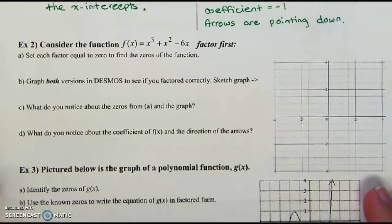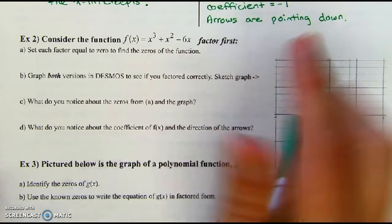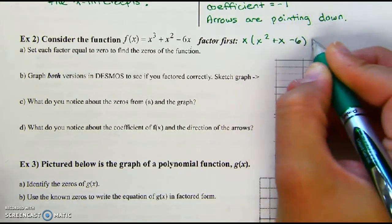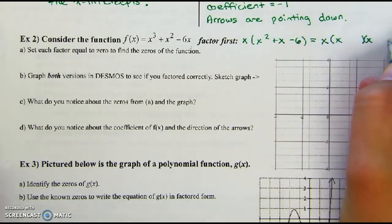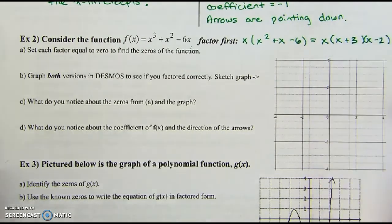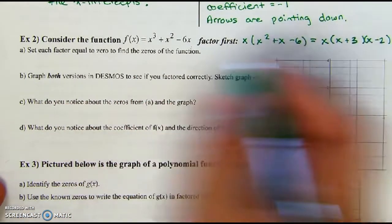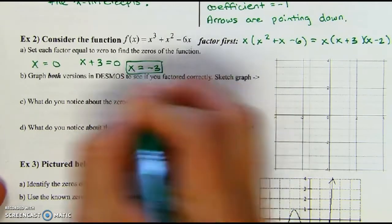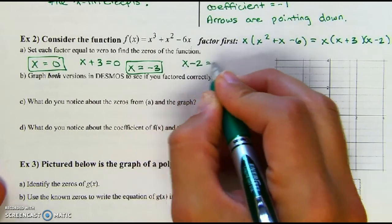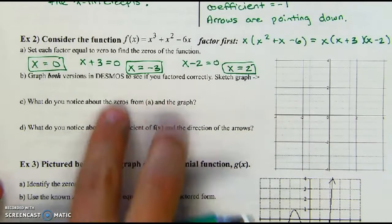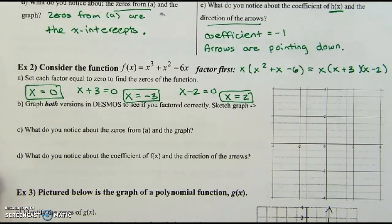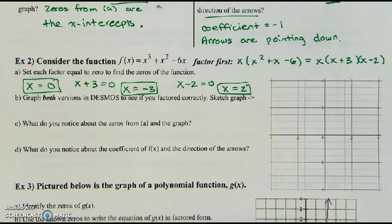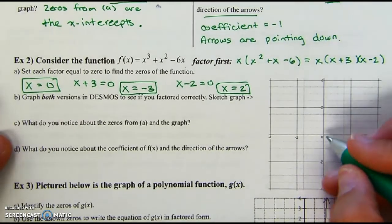Moving on to Example 2. Factor this function first — there's a common factor of x in everything, so factor x out. The remaining quadratic factors again: what multiplies to −6 and adds to 1? Set each factor equal to zero: x = 0, x + 3 = 0 so x = −3, and x − 2 = 0 so x = 2. The zeros are the x-intercepts — that's the big idea.